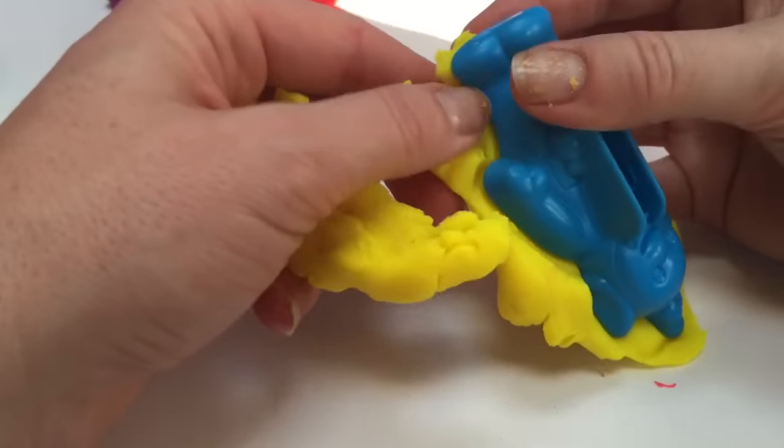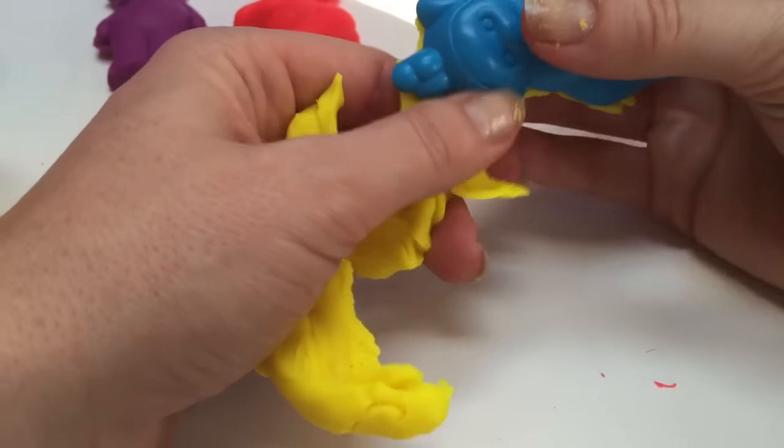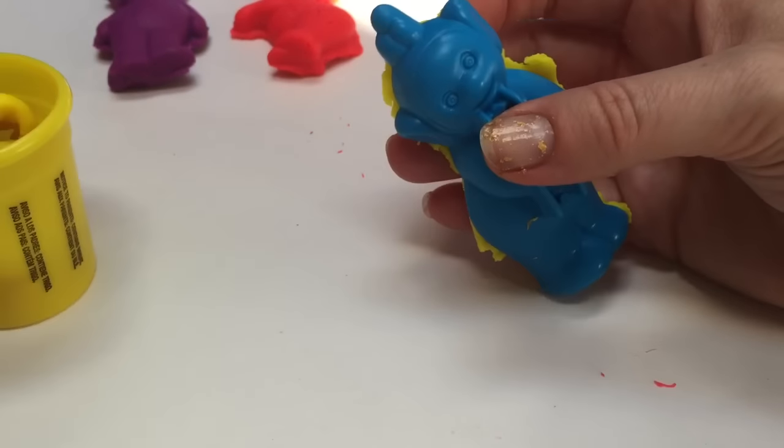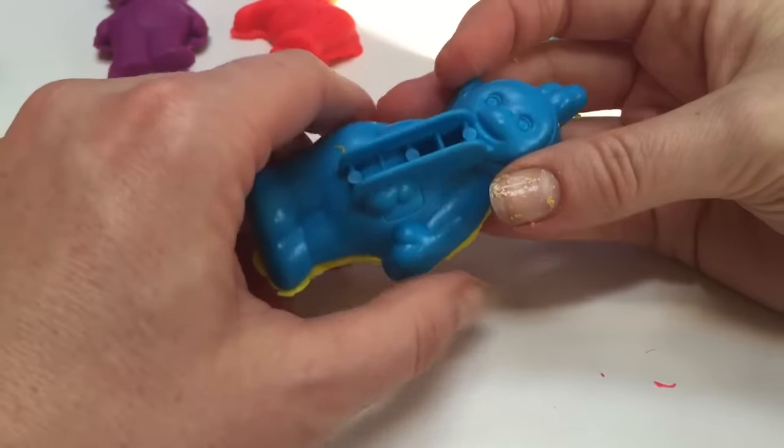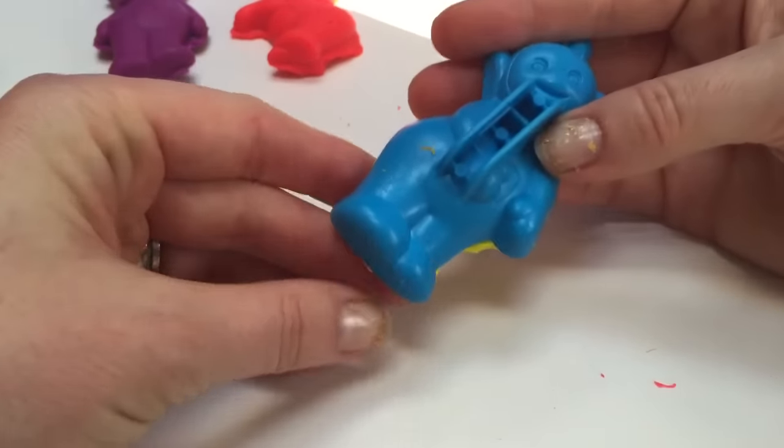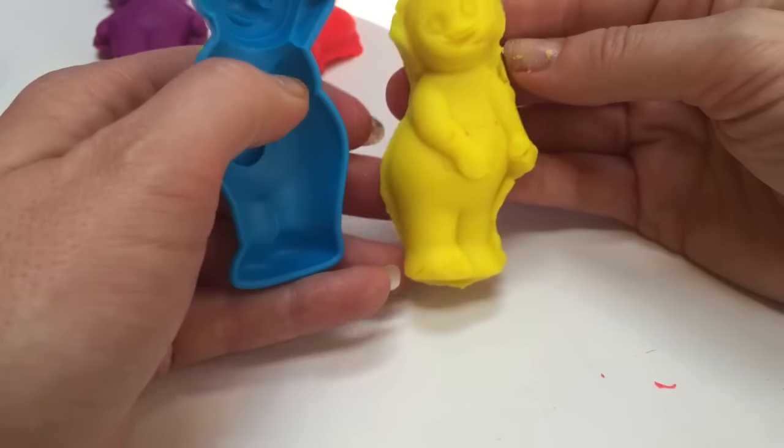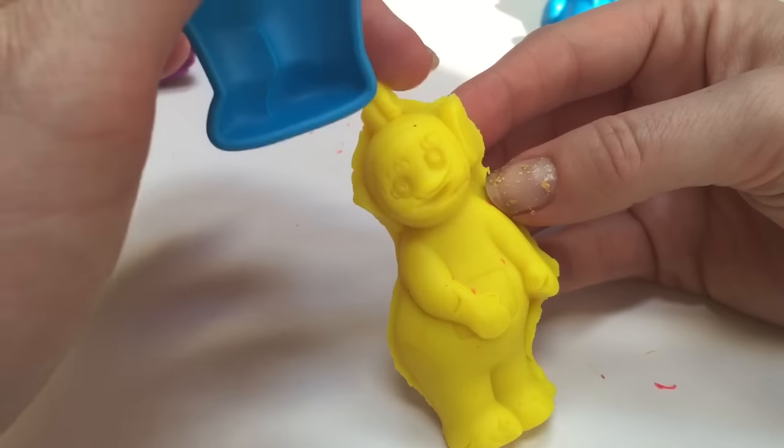And hopefully Lala's face turned out better than Poe's did. Sometimes it doesn't work out, and that's okay. You can always do it again with Play-Doh, can't you? Soften the edges a bit. And out comes perfect Lala! We even got the top of her head.